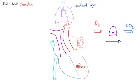Left atrium is going to pump that oxygenated blood to the left ventricle through the mitral valve. We have four chambers in the heart: left atrium, left ventricle, right atrium, right ventricle. We have four valves in the heart: mitral valve between left atrium and left ventricle; aortic valve between left ventricle and aorta; tricuspid valve between right atrium and right ventricle; pulmonic valve between right ventricle and pulmonary artery.